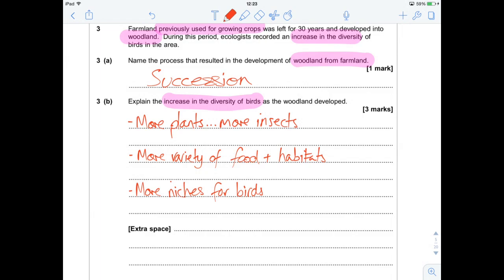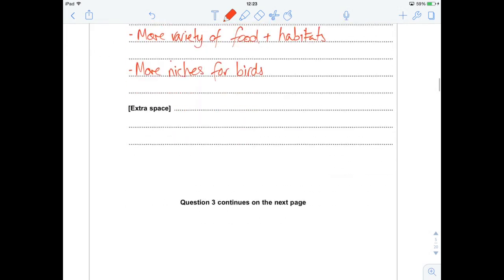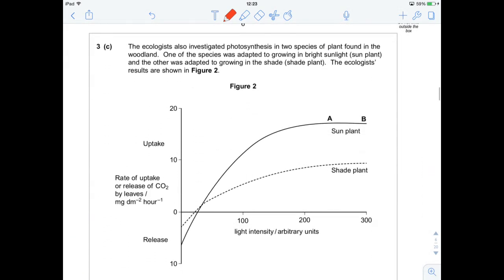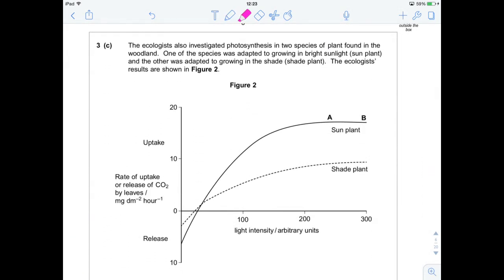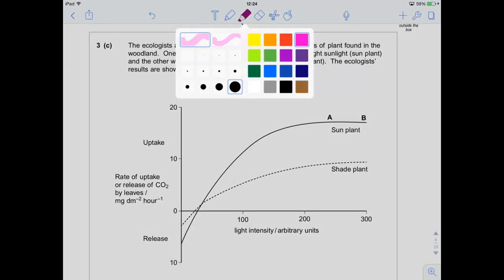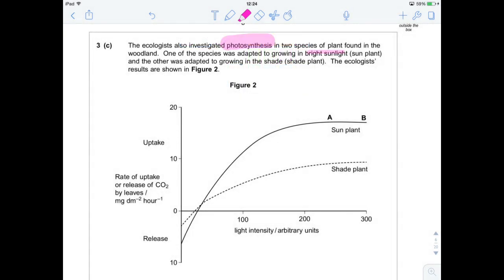Quite a nice little question, that, and it's another one that you can learn a stock answer for. And it'll come up year after year. So let's move on. The ecologists also investigated photosynthesis in two species of plant found in the woodland. One of the species was adapted to growing in bright light. I'm just going to make my highlighter a bit smaller. Bright light, which is the sun plant. And the other one was adapted to growing in the shade, the shade plant.